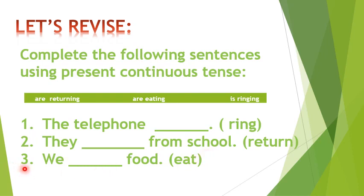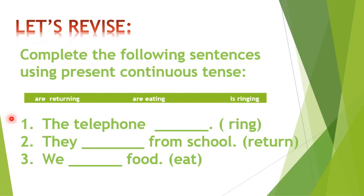Number 3: We ___ food. The subject is plural, so we use the helping verb 'are'. The main verb 'eat' is given and we add -ing with it, so it becomes: We are eating food. Hope the concept of present continuous tense is clear to all of you. Thank you.